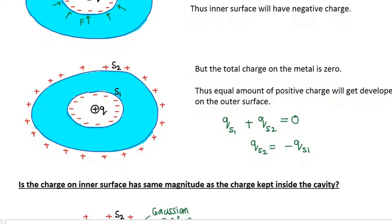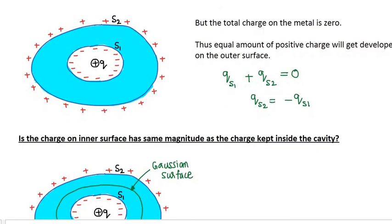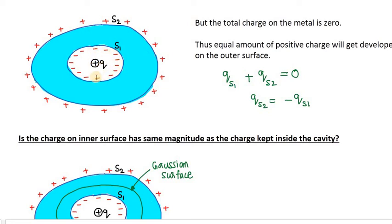Another question arises: is the charge on the inner surface the same in magnitude as the charge kept inside the cavity? That means if the charge inside the cavity is Q, what is the magnitude of the charge on the inner surface — is it the same as Q or different from it? Let us try to get the answer.